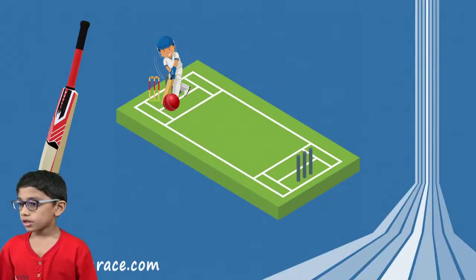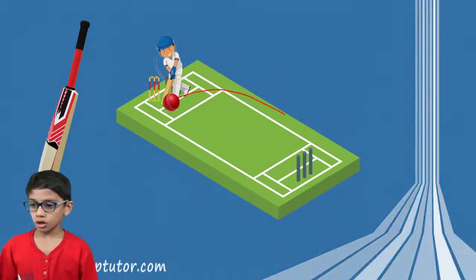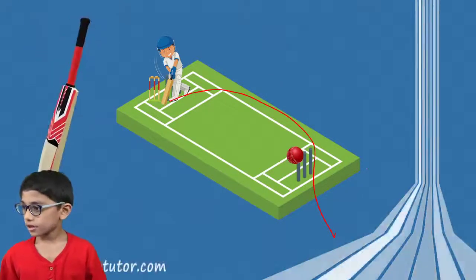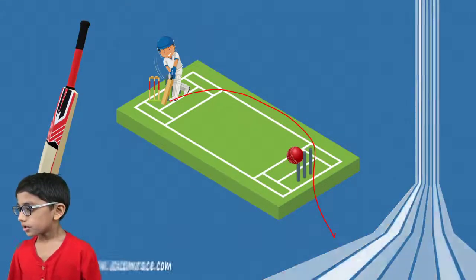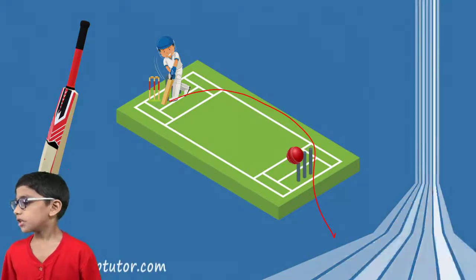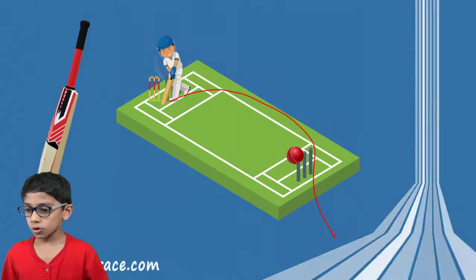This is a cricketer. He is throwing the ball on the wicket. And this batsman, with his bat, hits the ball and it goes.